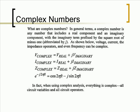What are complex numbers? In general terms, a complex number is any number that includes a real component and an imaginary component, with the imaginary term prefixed by the square root of minus 1, abbreviated by j. As shown below, voltage, current, and impedance operators, and even frequency, can be complex.